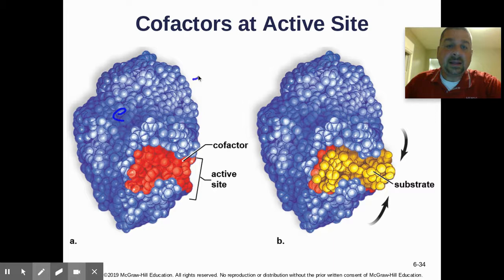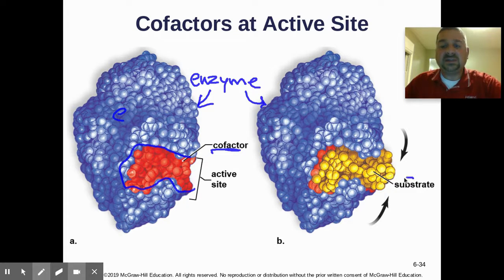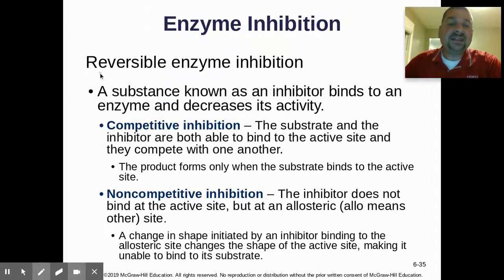This slide shows a space-filling model of an enzyme in blue with an active site. The cofactor shown in red slips into the active site and helps the substrate bond. Again, you can see the induced fit as the enzyme gives it a pinch or hug and causes the reaction to take place.